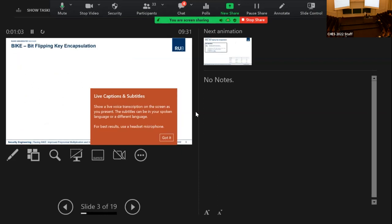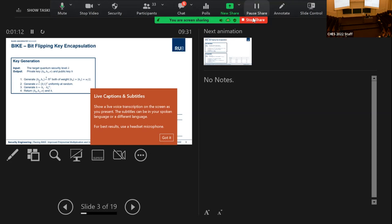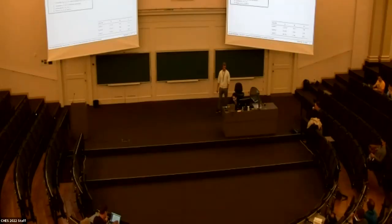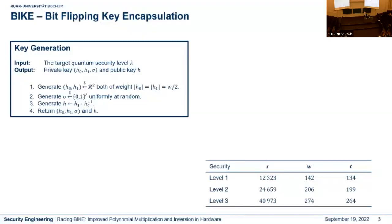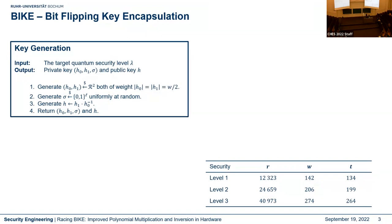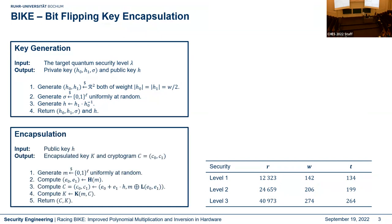BIKE stands for Bit Flipping Key Encapsulation. Since it's a key encapsulation, we have three algorithms: key generation, encapsulation, and decapsulation. In the key generation, we sample a private key consisting of two polynomials h0 and h1 and a random string sigma, and compute a public key h, where h is computed by h1 times the inverse of h0.